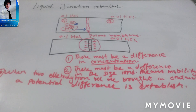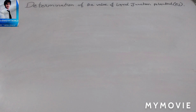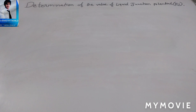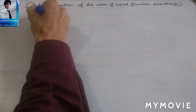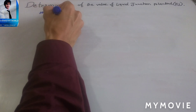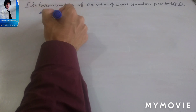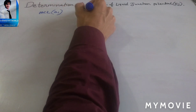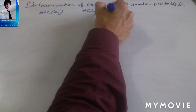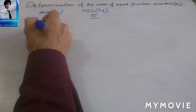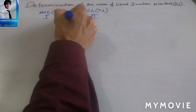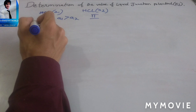Now, how do we determine the liquid junction potential? For the determination of the value of liquid junction potential Ej, we have HCl in chamber one with activity a₁ and HCl in chamber two with activity a₂. Since a₁ has greater concentration than a₂, we calculate the free energy change for positive cations.